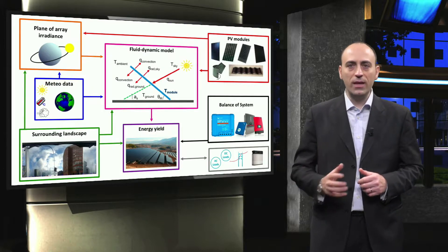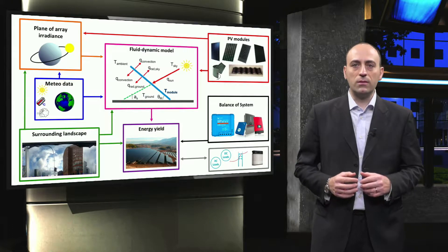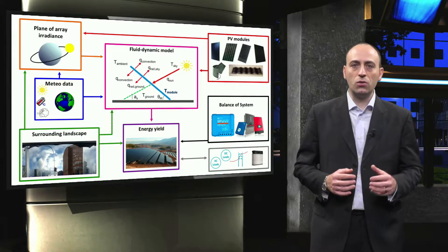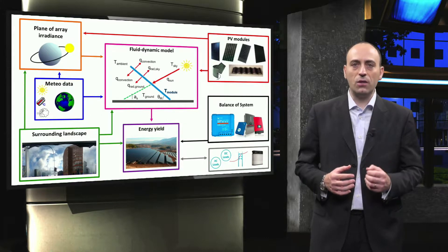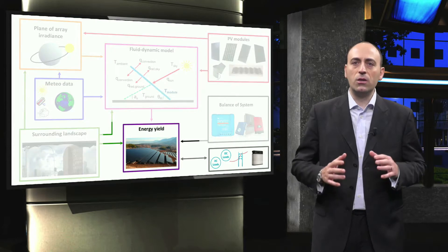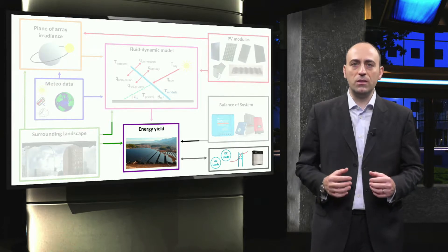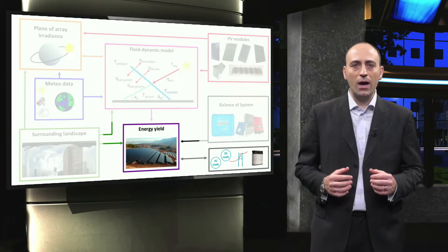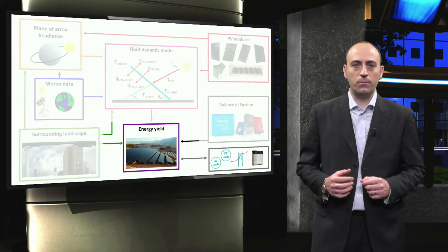In the last two weeks, the balance of system components such as charge controllers, converters, and inverters were discussed, as they are essential for an optimal operation of a PV system. In this week, we will consider all these aspects of PV system design to accurately predict the energy yield of a PV system.